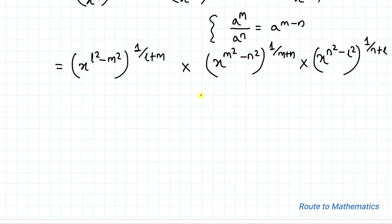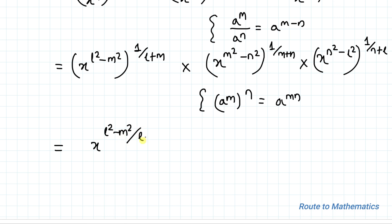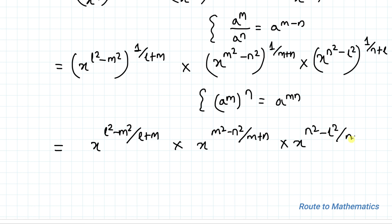Again we apply the exponential rule that a to the power m, whole to the power n, equals a to the power mn. Applying this rule we have x to the power (l squared minus m squared) divided by (l+m), multiplied with x to the power (m squared minus n squared) divided by (m+n), multiplied with x to the power (n squared minus l squared) divided by (n+l).